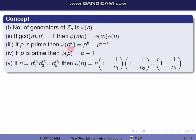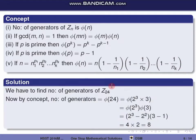The number of generators is φ(24). Factoring: 24 = 2³ × 3. Since GCD(2³, 3) = 1, we use the multiplicative property: φ(24) = φ(2³) × φ(3) = (2³ - 2²) × (3 - 1) = 4 × 2 = 8. So the number of generators is 8.